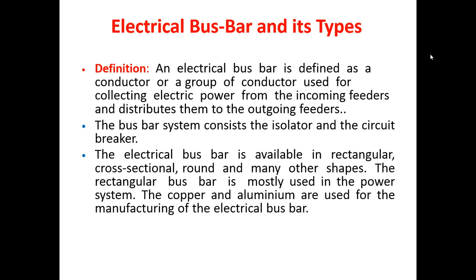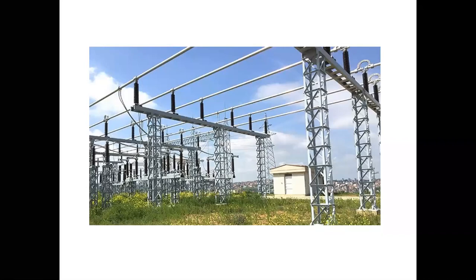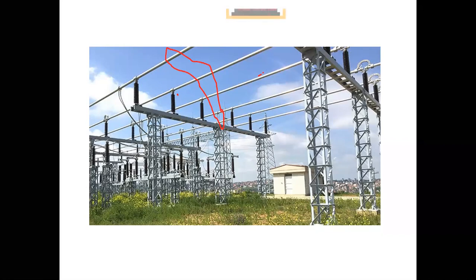Bus bars come in different sizes, as you can see here. These are bus bars connected by insulated pillars or insulators, and they are mechanically strong. Incoming feeders and outgoing feeders are connected, and transformers can also be connected. Bus bars are used in substations wherever we want to connect by metallic strip — this is the metallic strip.